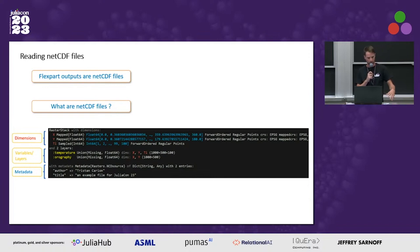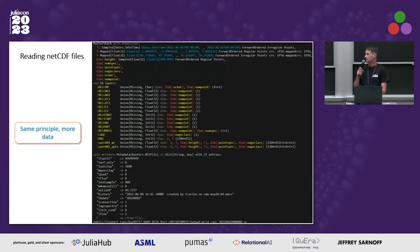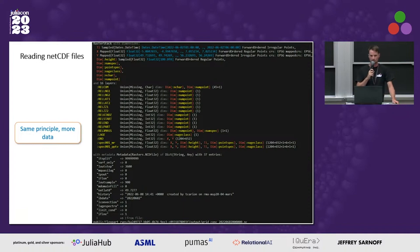For example, you have two layers — temperature and orography — that are defined on a set of dimensions: longitude, latitude, and time. In the case of Flexpart outputs, the file is much more complex, but it's exactly the same principle: layers defined on some dimensions.